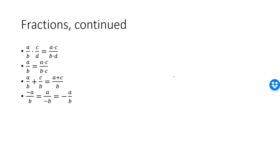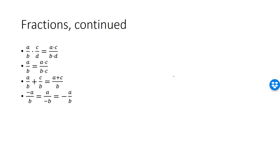We have some sign rules for fractions, and these sign rules follow from previous sign rules. Different signs give us minus A over B; the same signs give us A over B.